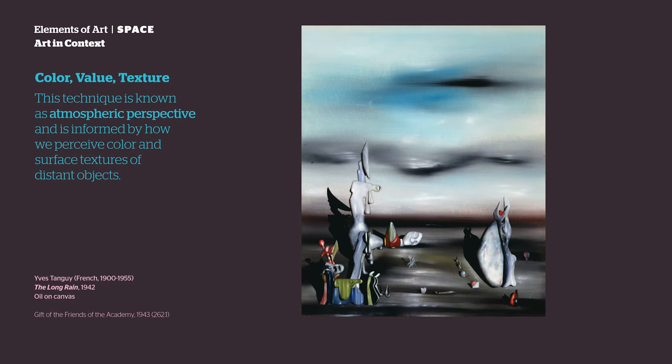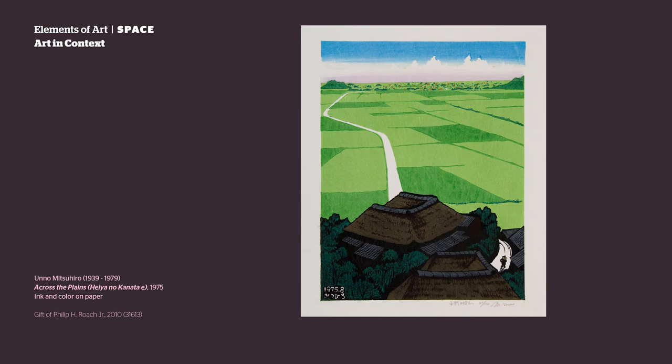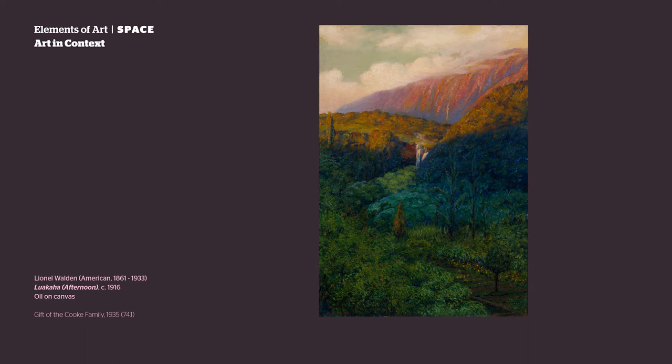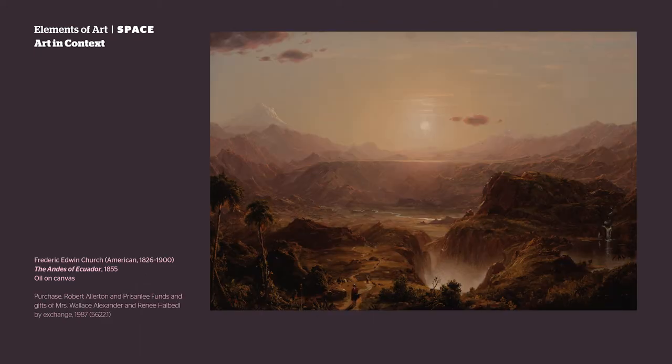Color, value, texture. This technique is known as atmospheric perspective, and is informed by how we perceive color and surface textures of distant objects. Adjusting texture and color is another way to create the illusion of distance. In general, closer objects are darker and warmer in color, while more distant objects are lighter and cooler in color. Notice how the intensity of the colors shift in the areas of this painting that are intended to be further away, and notice how the textures or sharply focused figures in the front of the scene give way to blurred or disappearing figures in the distance.